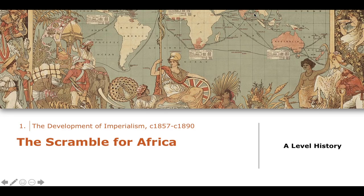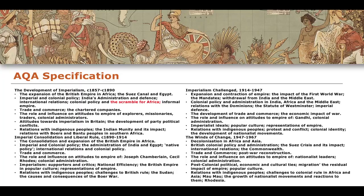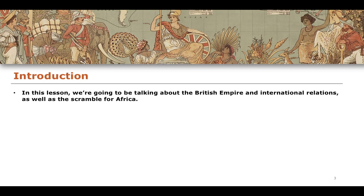Welcome back everybody to AQA A-Level History. We are continuing talking about the development of imperialism for the British Empire, covering the topic between around 1857 to 1890. We're going to focus in this lesson on this idea known as the Scramble for Africa. It is still part of the first and second part of the AQA specification, talking about colonial policy and the scramble for Africa and this idea of the informal empire.